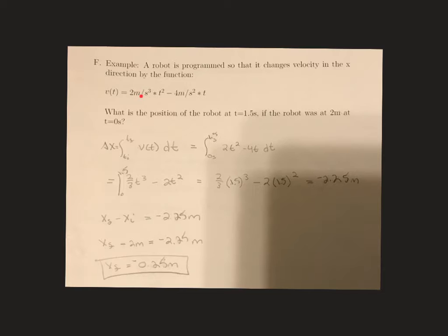So velocity as a function of t is equal to 2 meters per second cubed times time squared minus 4 meters per second squared times t. And we want to know what the position of the robot is at t equals 1.5 seconds if at t=0 the robot was at 2 meters.